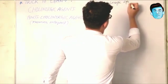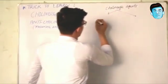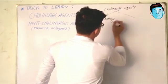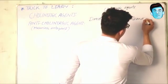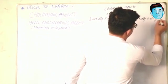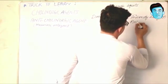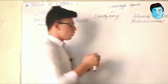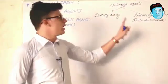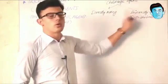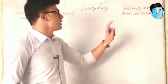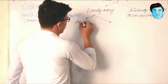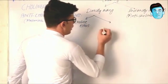Cholinergic agents are broadly classified into two types: directly acting cholinergic agents, and indirectly acting cholinergic agents which are also called anticholinesterases. Directly acting cholinergic agents are further classified into choline esters and alkaloids.